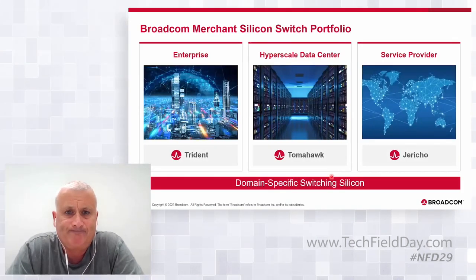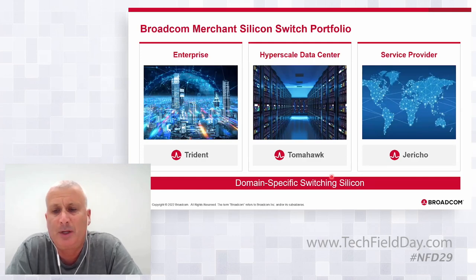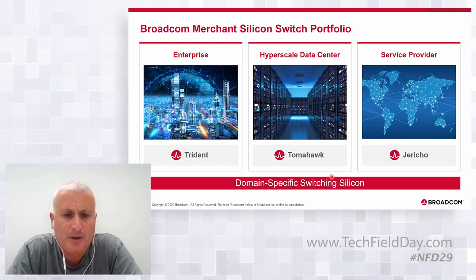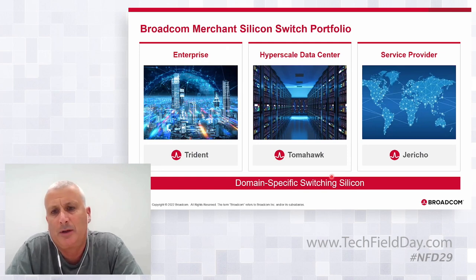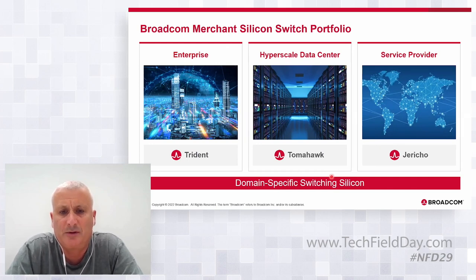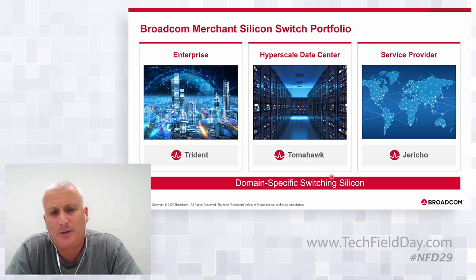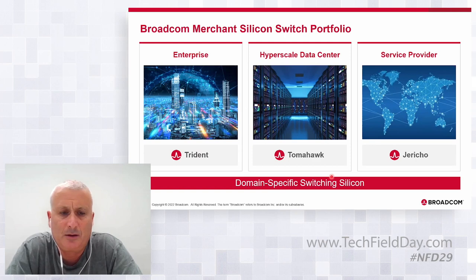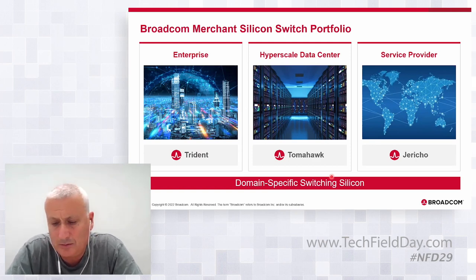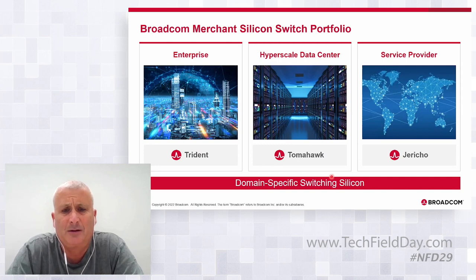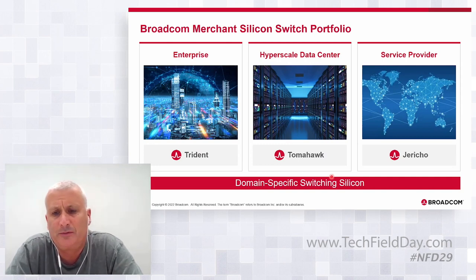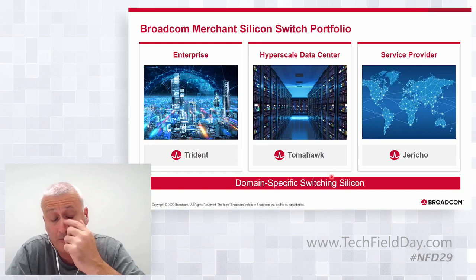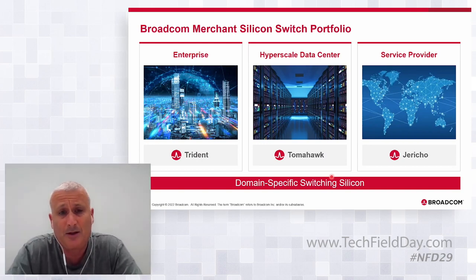In the core switch group, we have three product families. The Trident is more optimized for the enterprise market. The Tomahawk is more optimized for the hyperscale data center market. And the Jericho, the DNX product line, is more optimized for the service provider market. We have chosen to have multiple architectures, unlike some competitors who use a single architecture for all markets.